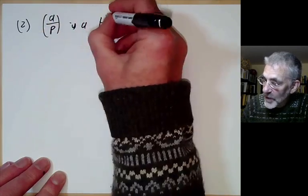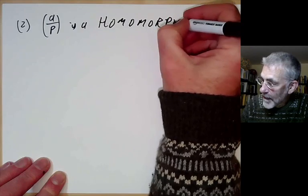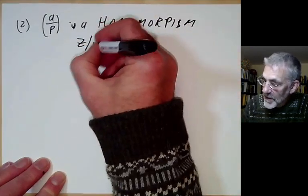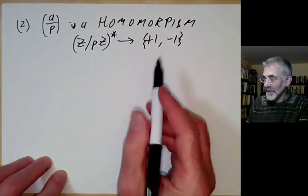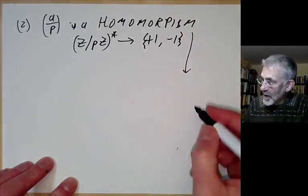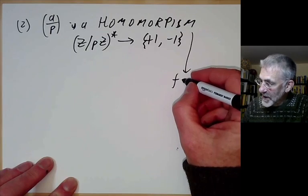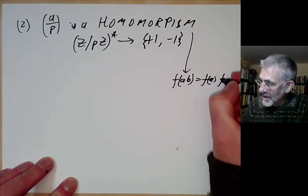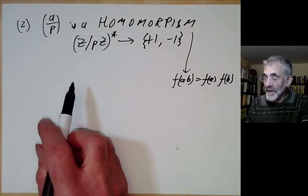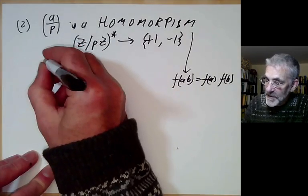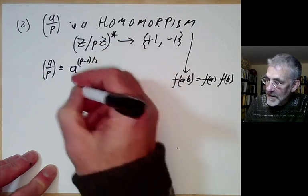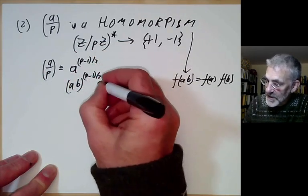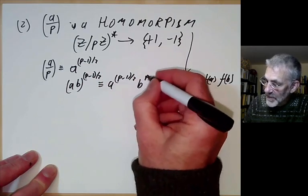Another property is that the Legendre symbol is a homomorphism from (ℤ/pℤ)* to the group {+1, −1}. A homomorphism is just a way of saying it preserves multiplication, so f(ab) = f(a)·f(b). We can show this is a homomorphism by noticing that (a/p) ≡ a^((p−1)/2), and it's obvious that (ab)^((p−1)/2) ≡ a^((p−1)/2) · b^((p−1)/2).